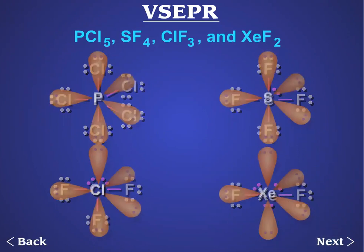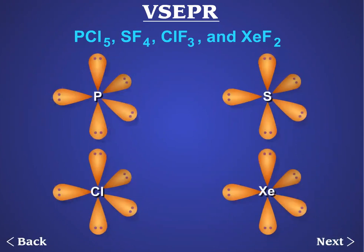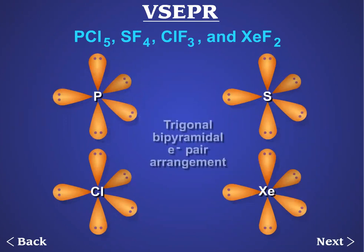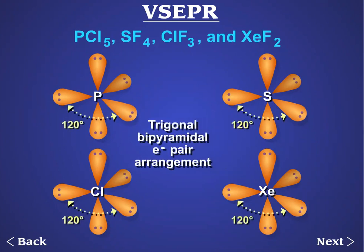The electron pair arrangement that minimizes repulsion for five pairs of electrons is trigonal bipyramidal. The angle between electron pairs in the equatorial plane is 120 degrees. The angle between an axial electron pair and an equatorial pair is 90 degrees.